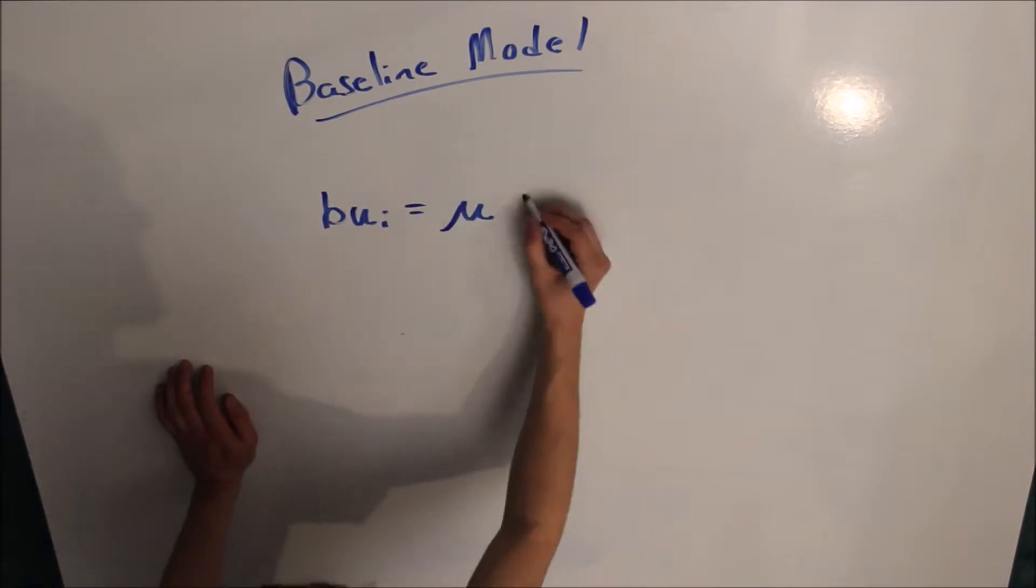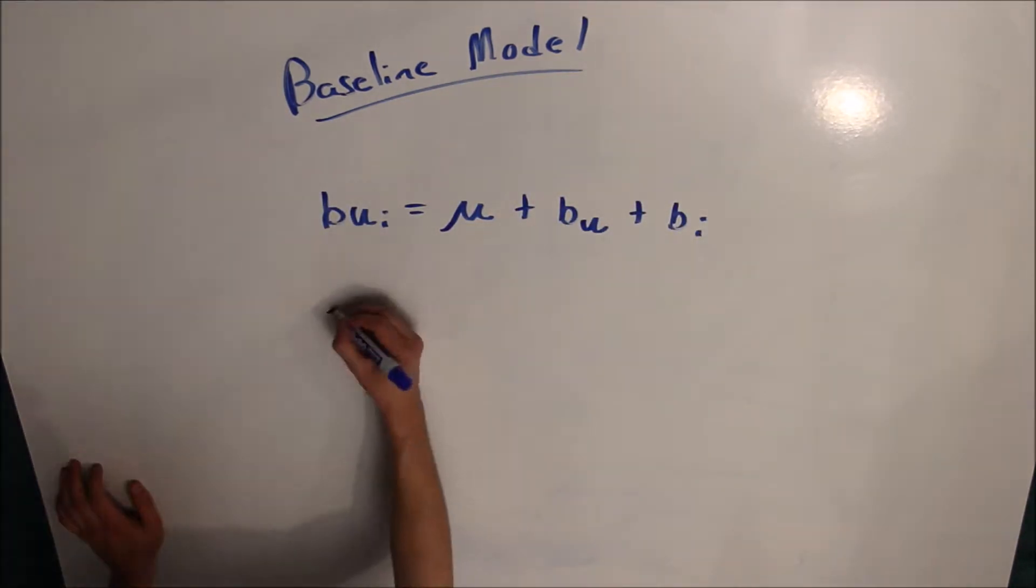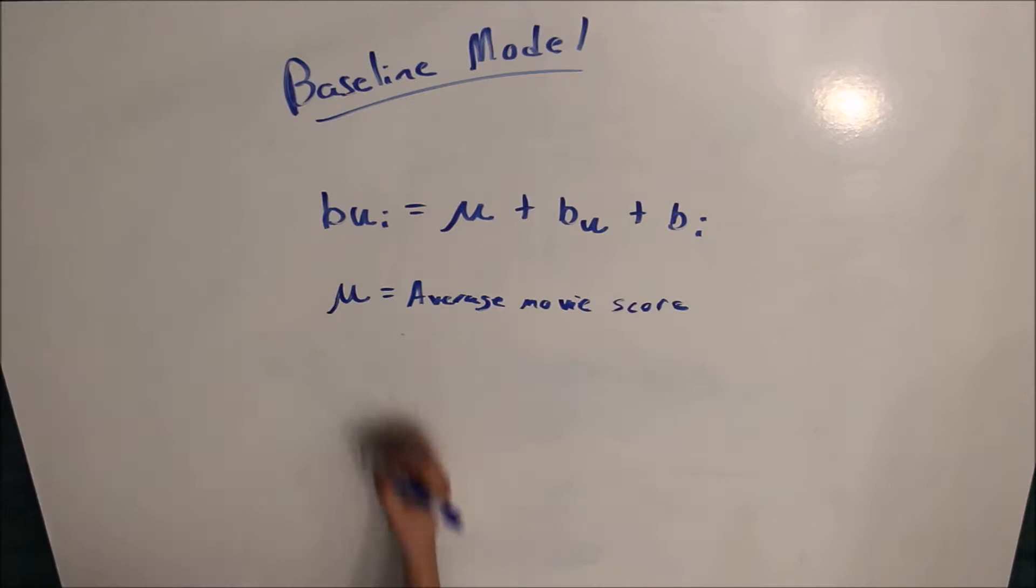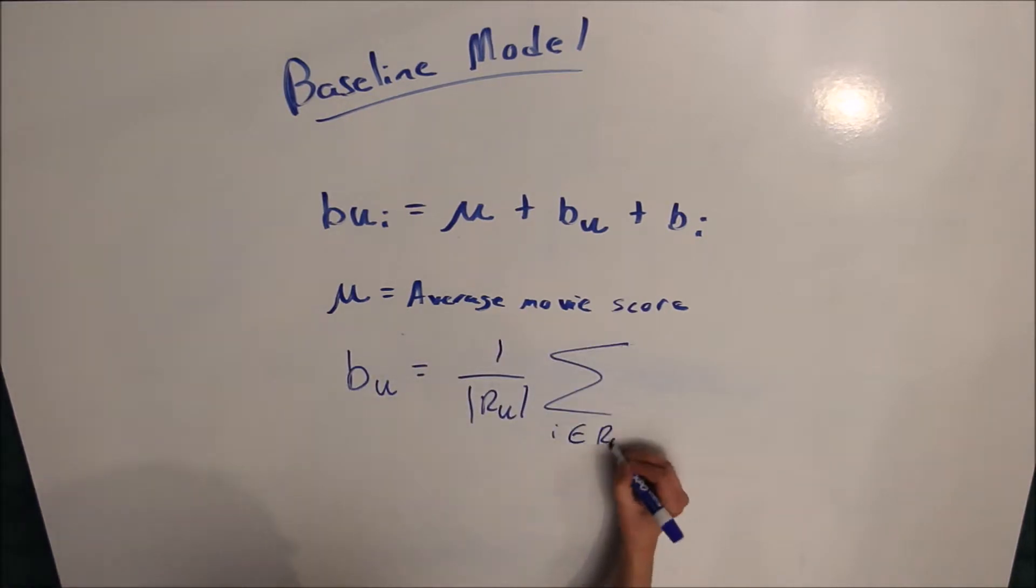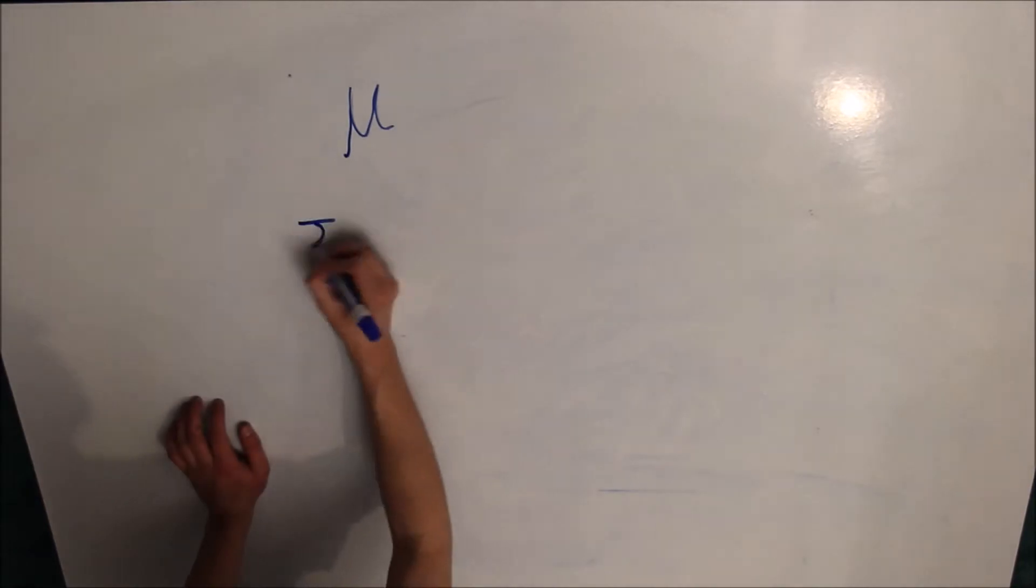To start off with, we start with a baseline model, which only uses explicit data, ratings that have already been given, to construct it. We use three primary values: mu, b of u, and b of i. Together, they form BUI, which is the rating given for a certain movie for a certain user.